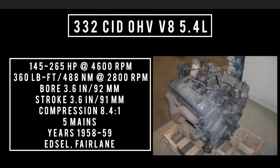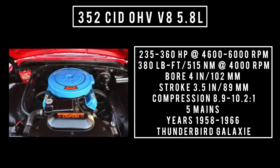Introduced in 1958, the 332 cubic inch displacement overhead valve V8, 5.4 liters, is good for anywhere between 145 to 265 horsepower at 4,600 RPM, 360 pound-feet or 488 newton meters at 2,800 RPM, with a bore of 3.6 inches and a stroke of 3.6 inches. Compression was 8.4 to 1, featured four main bearings, built of cast iron. This engine was used between 1958 and 1959, mostly in the Edsel in 1958. It was also used in the Fairlane. It used mechanical lifters until about mid-year 1958, then switched to hydraulic.